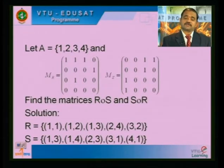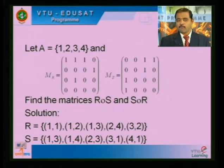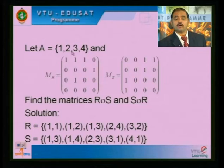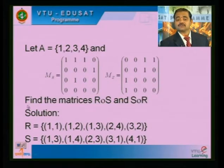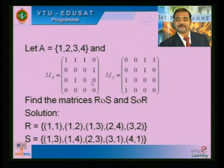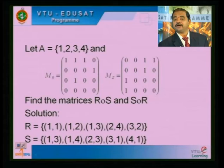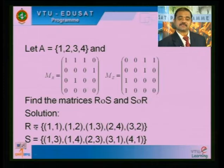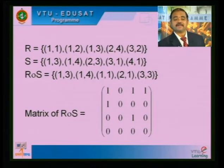Now consider a problem where A = {1,2,3,4} and relations R and S are represented in the form of matrices. You are asked to find the matrices of R composite S and S composite R. Before finding the matrices you have to find the relations. M(R) says element (1,1), (1,2), (1,3), then second row has (2,4) and (2,3). M(S) has elements (1,2), (1,3), (1,4), (1,3), (1,4), (2,3), (3,1), (1,4).